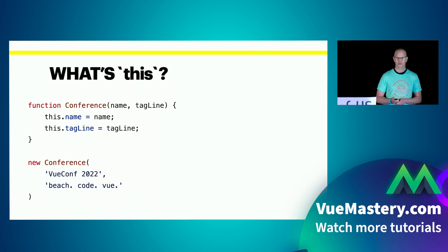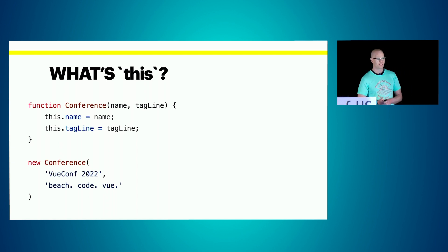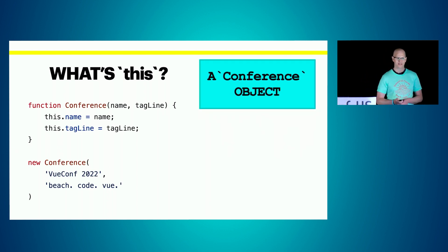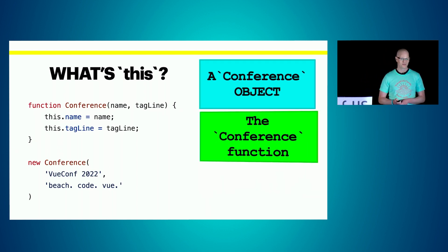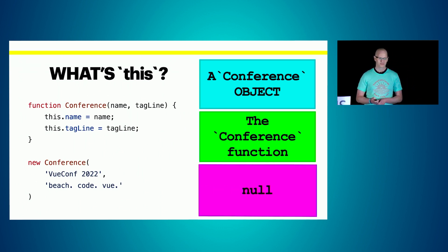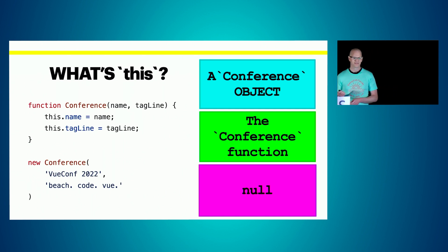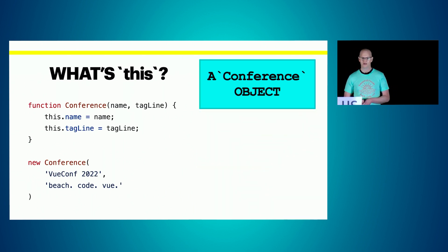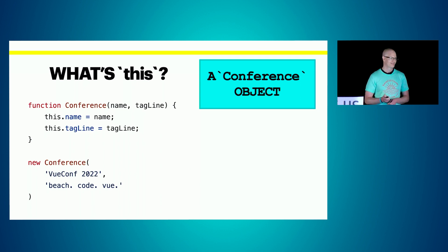Question number four: this is a function declared in global scope with a capital C, meaning it's a constructor function — what classes looked like before ES6. We're using the 'new' operator when invoking the function 'Conference'. What's 'this'? Is it a Conference object, the Conference function itself, or null? If you answered a Conference object, you're right.